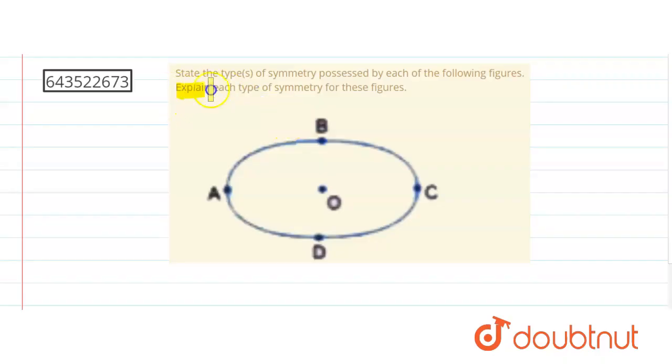each type of symmetry in this figure. Okay, so see here if we draw a line passing through A and C and the origin, so what I get - see it is like this. See this line just exactly makes this equal to equal parts of this figure.